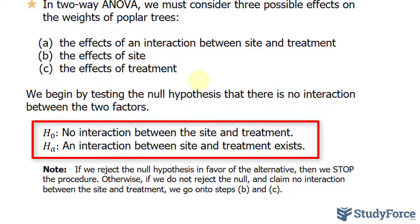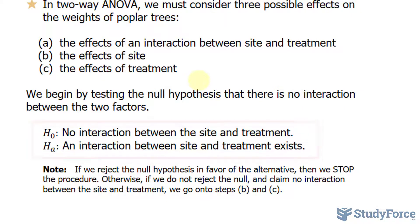We begin by testing the null hypothesis that there is no interaction between the two factors. The null hypothesis says that no interaction between the site and treatment exists, and the alternative is the opposite where an interaction between site and treatment exists. Now if we reject the null hypothesis, then we stop the procedure. Otherwise, if we do not reject the null and claim no interaction occurs, we move on to testing B and C.